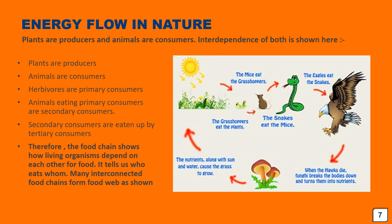From this we can conclude that plants are the producers. Animals are the consumers. Herbivores like the grasshopper are the primary consumers. Animals eating primary consumers, like the mice, are the secondary consumers. Secondary consumers are in turn eaten up by tertiary consumers. This chain goes on and on, telling us that energy flows in nature from one level to another.